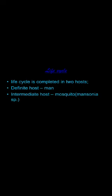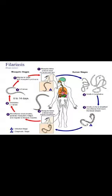Coming to the life cycle, it is again completed in two hosts — the definitive host being the human and the intermediate host being mosquitoes belonging to the genus Mansonia. In Wuchereria it was Culex or Aedes; in Brugia malayi it is the genus Mansonia. The infective stage is again the L3 larva, passed to humans through a mosquito bite. The L3 larvae grow into adults in the human lymphatics, and after mating, the female releases microfilariae which escape into the general circulation.